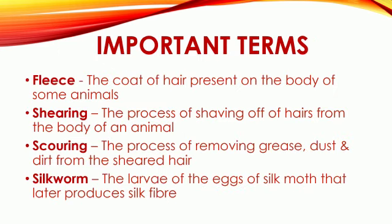Important Terms. Fleece: the coat of hair present on the body of some animals. Shearing: the process of shaving off hairs from the body of an animal. Scouring: the process of removing grease, dust and dirt from the sheared hairs.